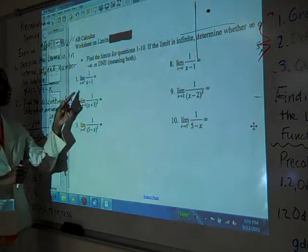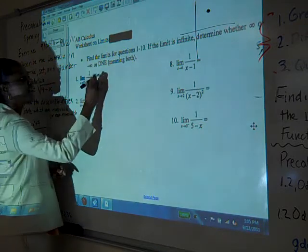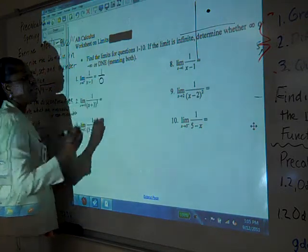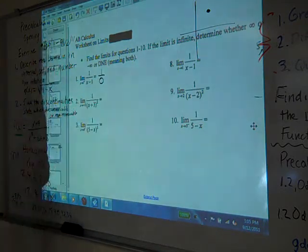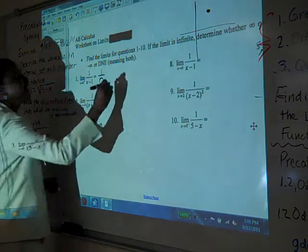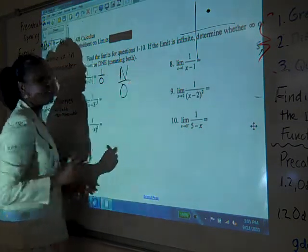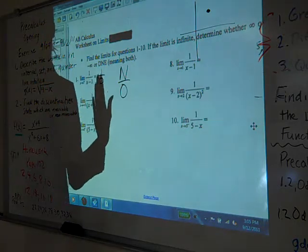So what are we substituting in? One. When you plug in a one, what are you going to get? Three. You're going to get one over zero, right? That's a no-no. That is a no-no. Very good.